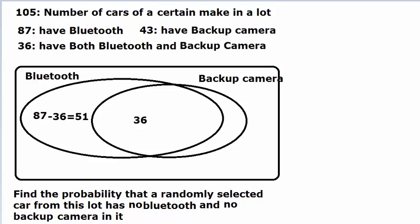And now assume that we have to find this probability: a randomly selected car neither has Bluetooth nor has a backup camera in it. That means we are looking for which region? This region, the region outside of these two.